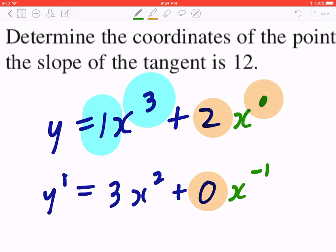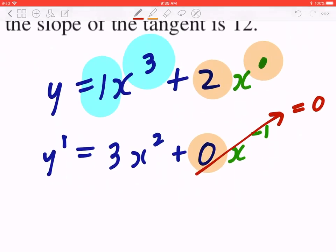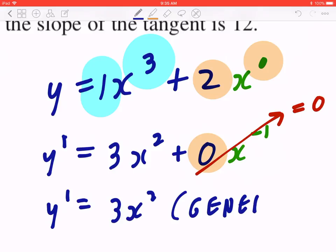Take the exponent, subtract 1. And effectively, 0 divided by x will still be 0. Therefore, y prime equals 3x squared, which is the general slope.